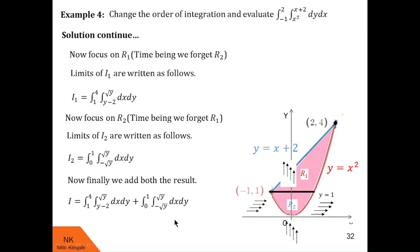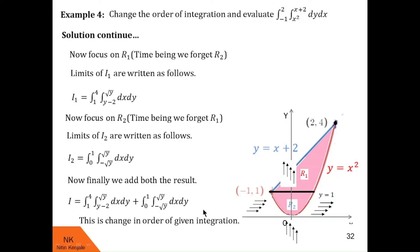So the combined integral I = double integral dx dy with inside limits y minus 2 to root y and outside limits 1 to 4, plus double integral dx dy with inside limits minus root y to plus root y and outside limits 0 to 1. This is how we changed the order of integration by splitting the region into two parts. I am leaving the evaluation for students. Please write in the comments whether you were able to solve these examples. I will be coming with more such interesting videos — till then, keep watching. Thank you.